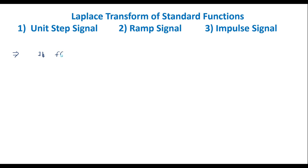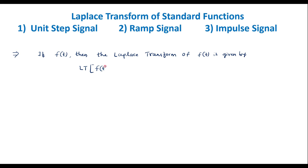If f of t is a function, then the Laplace transform of f of t is represented as F of s, which is given by the formula: integration of 0 to infinity of f of t times e to the power minus st dt. So this is the Laplace transform of any function f of t.